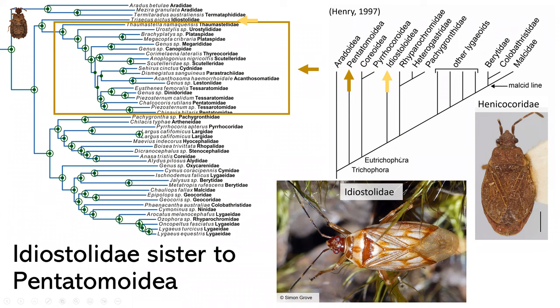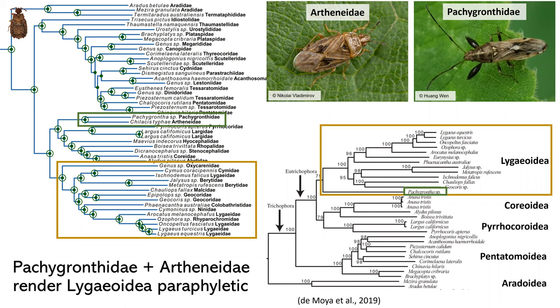This is in disagreement with the Henry et al. analysis. And we found that Pachygronthidae and Arthenaidae render Lygaeoidea paraphyletic.